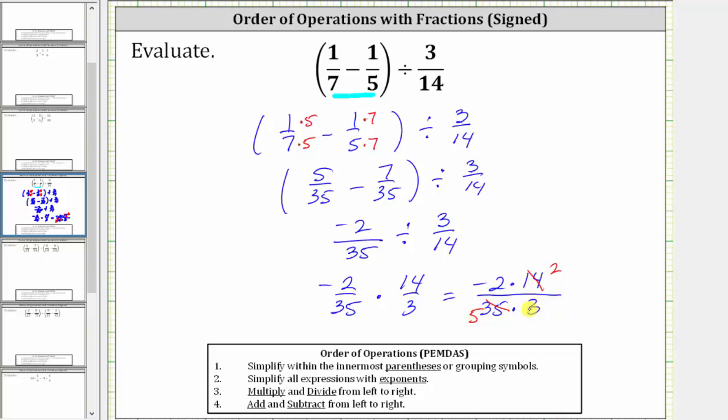Notice now the only common factor between the numerator and denominator is 1, so now we can determine the products and know the fraction will be in simplest form.